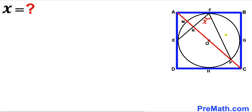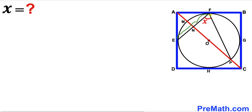Welcome to PreMath. In this video we have a circle with center O fully inscribed in a blue square ABCD, such that AC is the diagonal of the blue square, along with two chords EF and FP, resulting in angle X. Our task is to calculate this angle X.